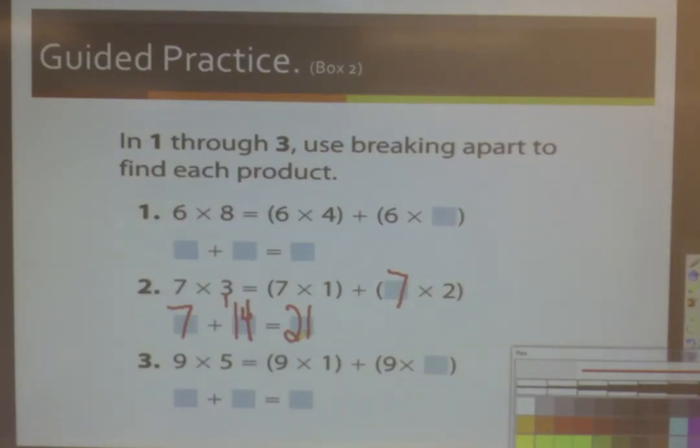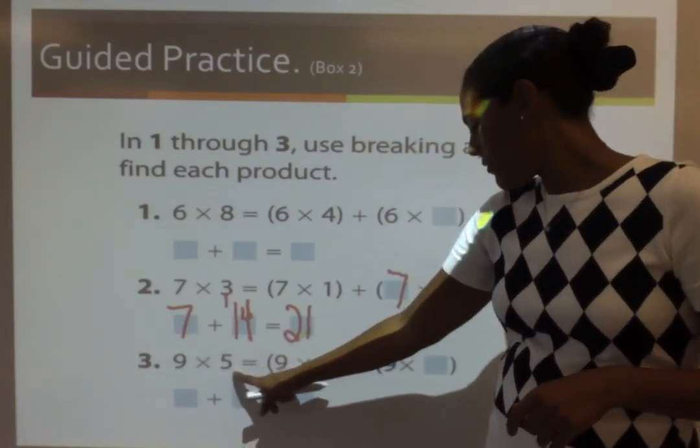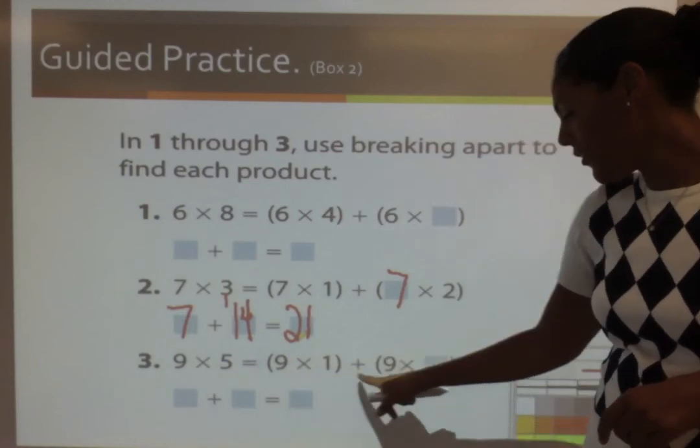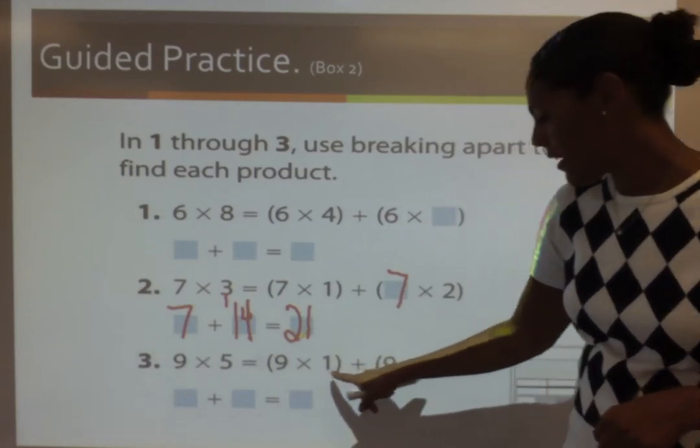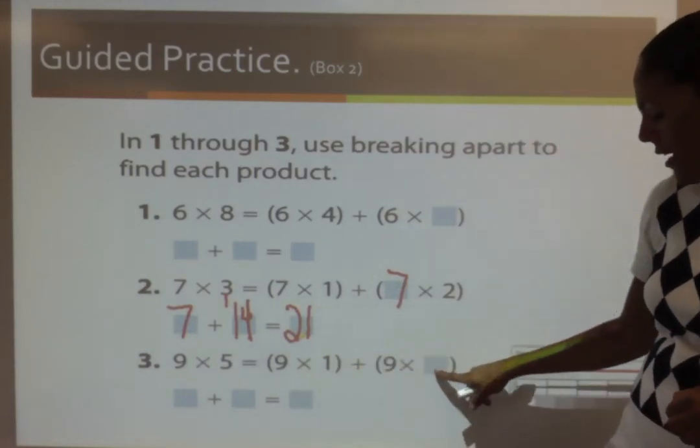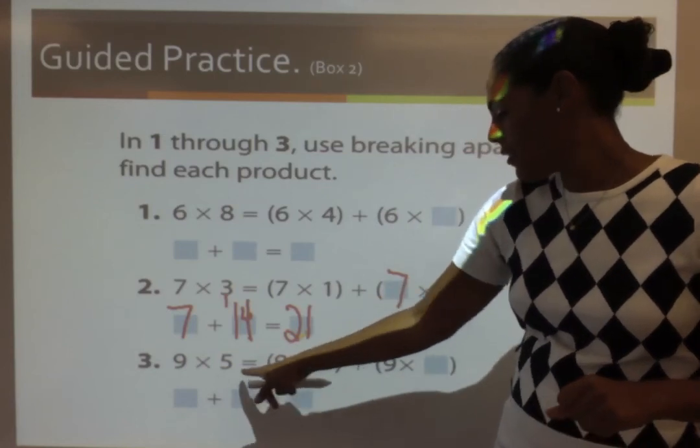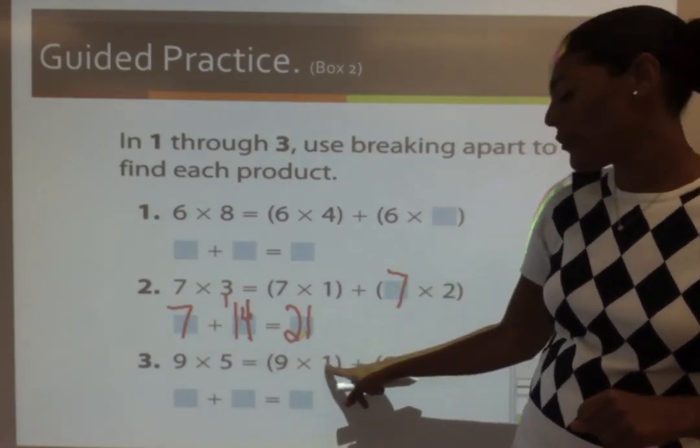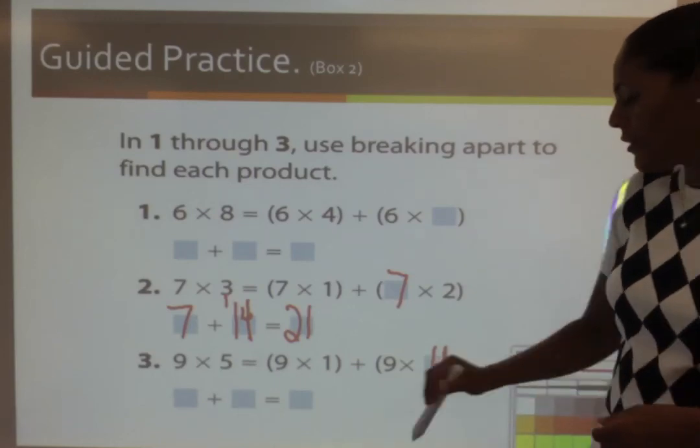Last problem we're going to work on together. 9 times 5. I see a 9 here and a 9 here. So, I'm not doing anything with the 9. I see a 1 and nothing. So, that means that they broke apart the 5. 1 plus the number will give you 5. 1 plus 4.